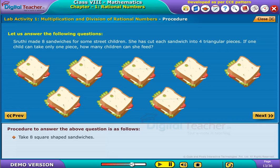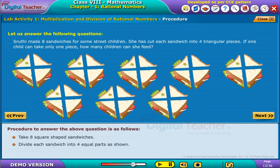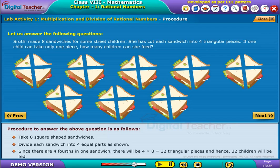Take eight square shaped sandwiches. Divide each sandwich into four equal parts as shown. Since there are four fourths in one sandwich,